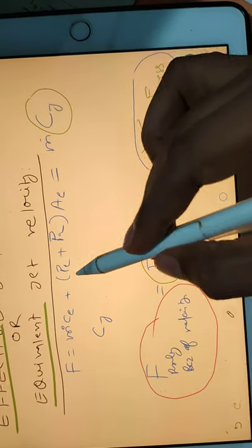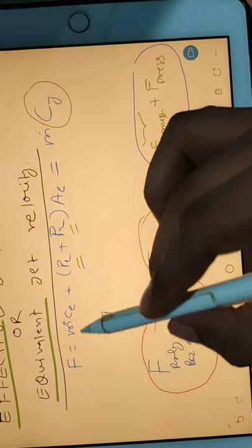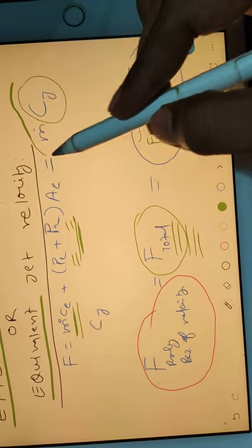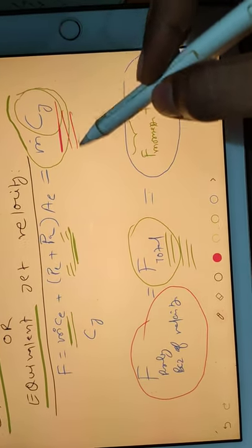This pe is your exit pressure and this is your atmospheric pressure. I am saying that we equate this momentum thrust plus pressure thrust with this total thrust, and I am just imagining that this total thrust is being produced.